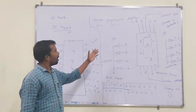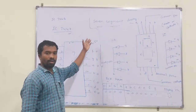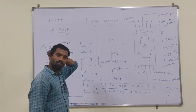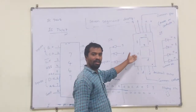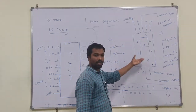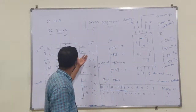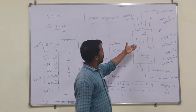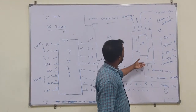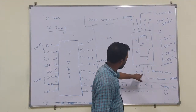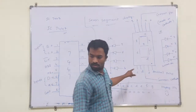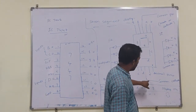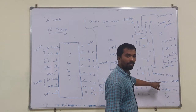Hi students. In our lab we have BC-52 seven segment display. For that seven segment display, I see it. This is the driver IC. The seven segment display has a total of 10 pins. The middle pin is the common pin.